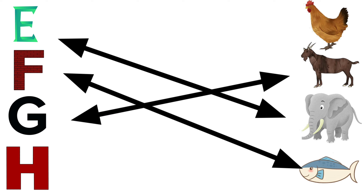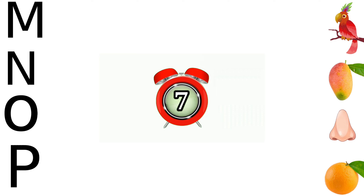I for ice cream, K for kite, J for joker, L for lion.